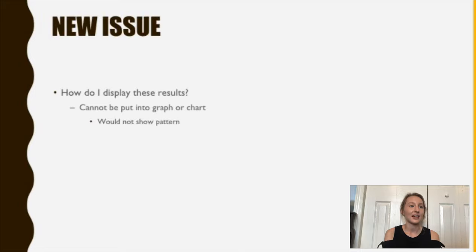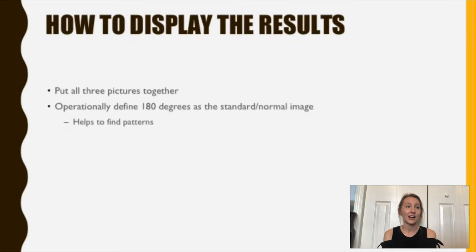The new issue was that how do I display these results? Because you can't really put them into a graph or a chart because it doesn't show the pattern that I needed to see for the actual experiment. So then I figured out how to display them was maybe to put all three of the pictures together that I got. So that would be the 180 degree picture, the 80 degree, and the 40 degree. And I would operationally define 180 degrees as the standard or normal image. And this would maybe help to find a pattern.